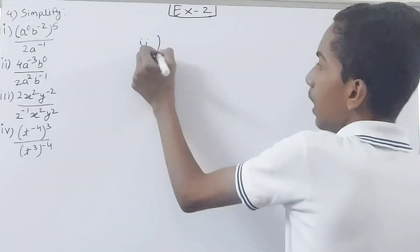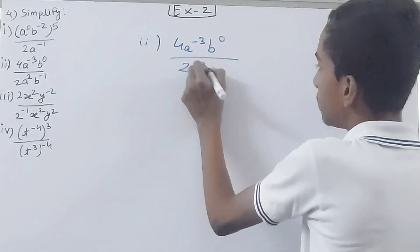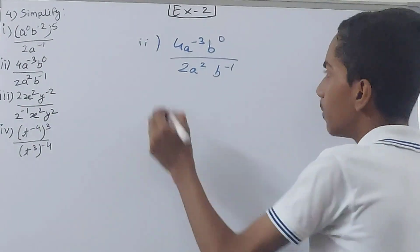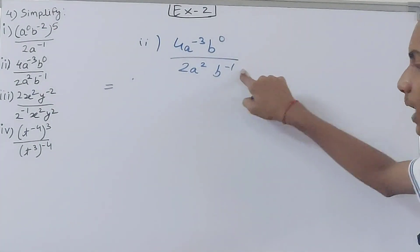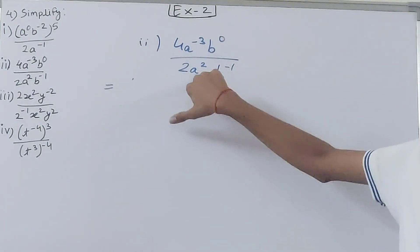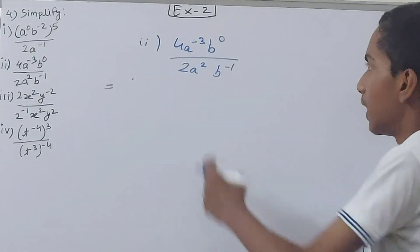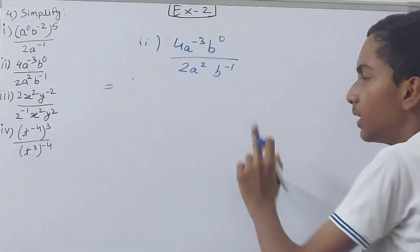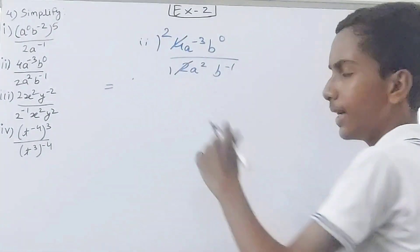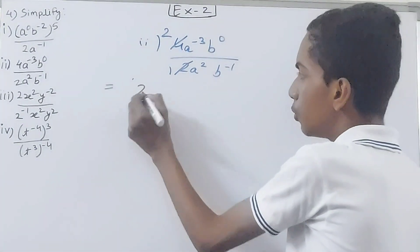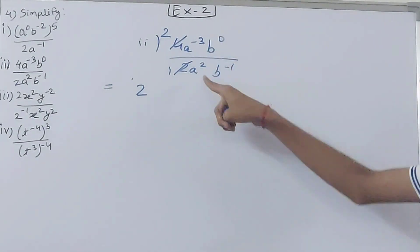The second part is 4a to the power minus 3, b to the power 0, upon 2a squared, b to the power minus 1. Here we have b⁰, b⁻¹, a⁻³, and a². We can deal with the 4 and 2 first — 4 divided by 2 gives 2, so we write 2 here.